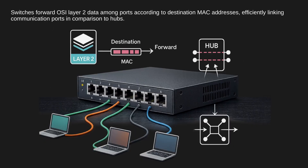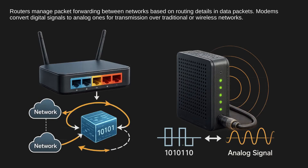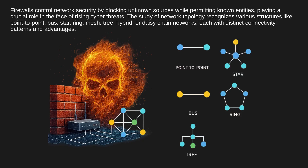Switches forward OSI Layer 2 data among ports according to destination MAC addresses, efficiently linking communication ports in comparison to hubs. Routers manage packet forwarding between networks based on routing details in data packets. Modems convert digital signals to analog ones for transmission over traditional or wireless networks. Firewalls control network security by blocking unknown sources while permitting known entities, playing a crucial role in the face of rising cyber threats.